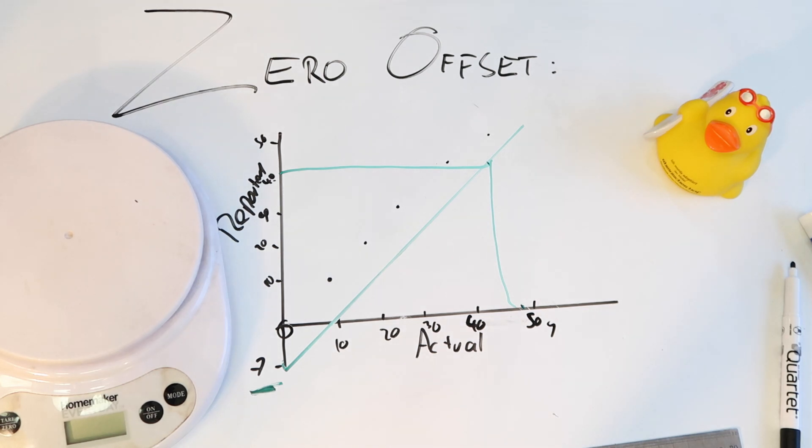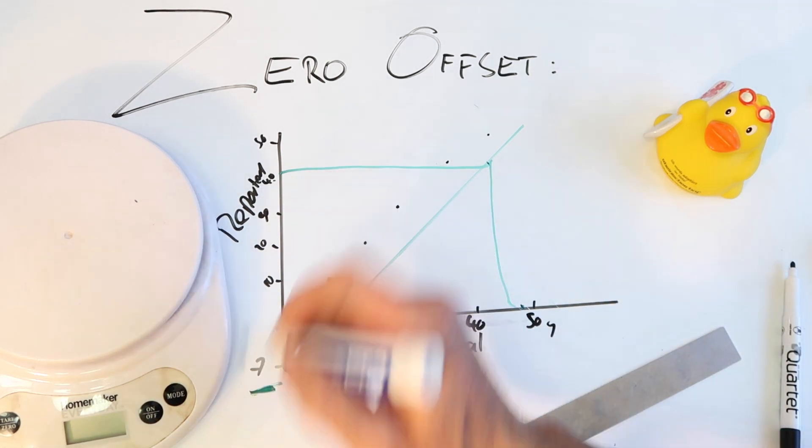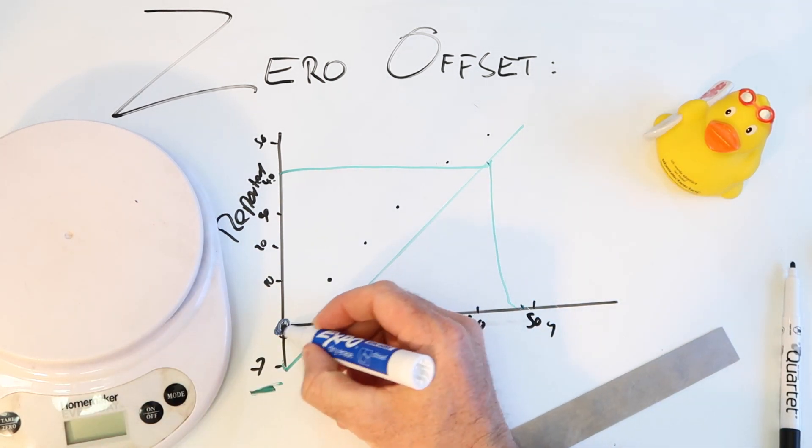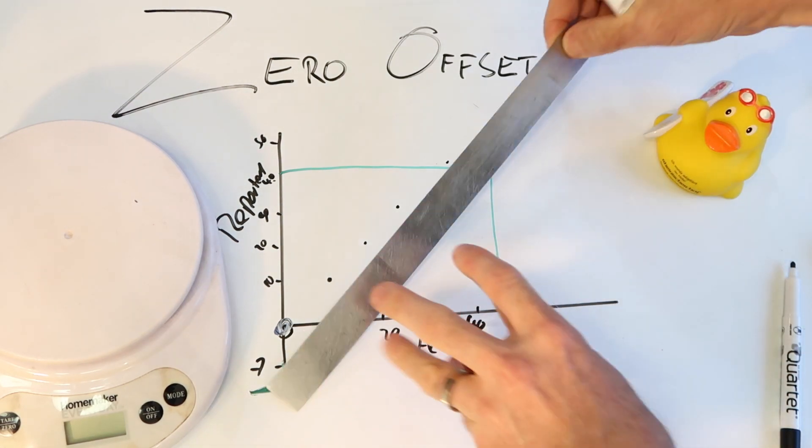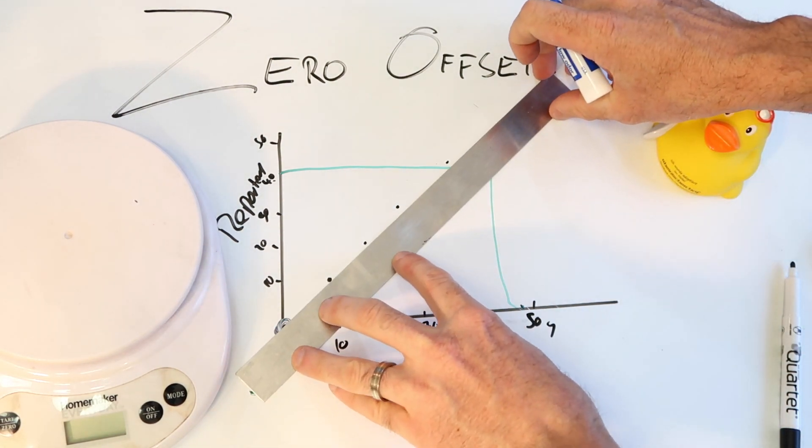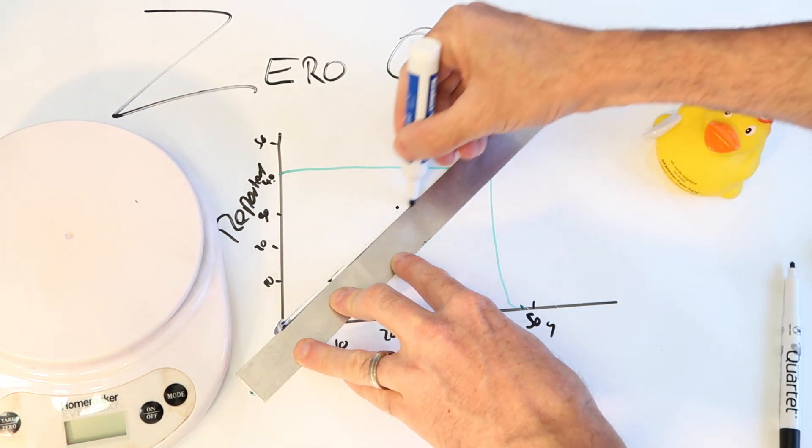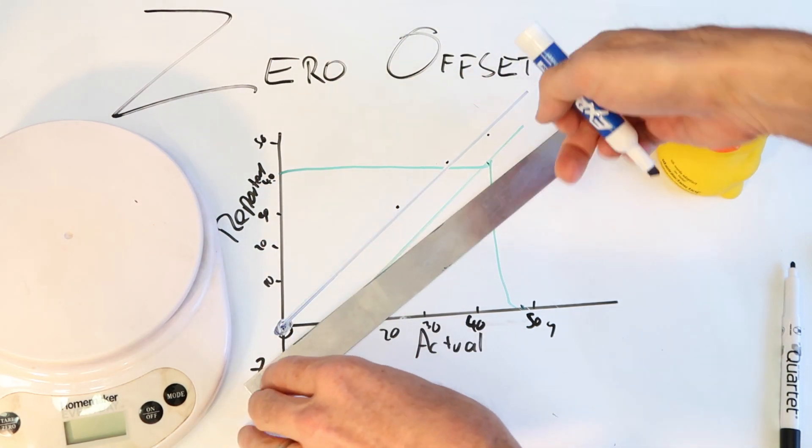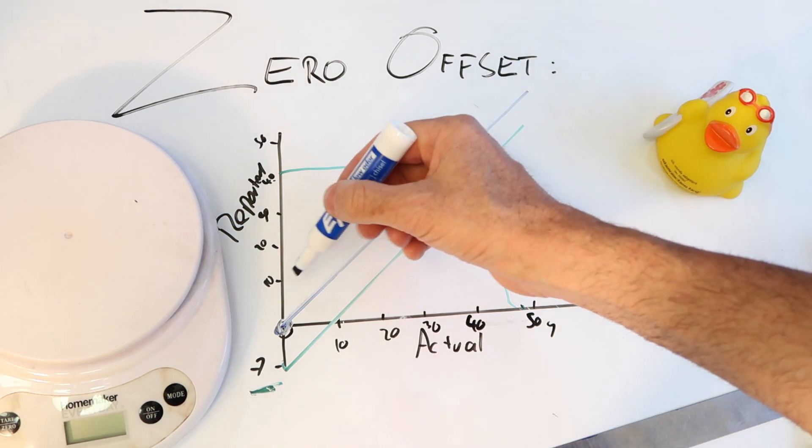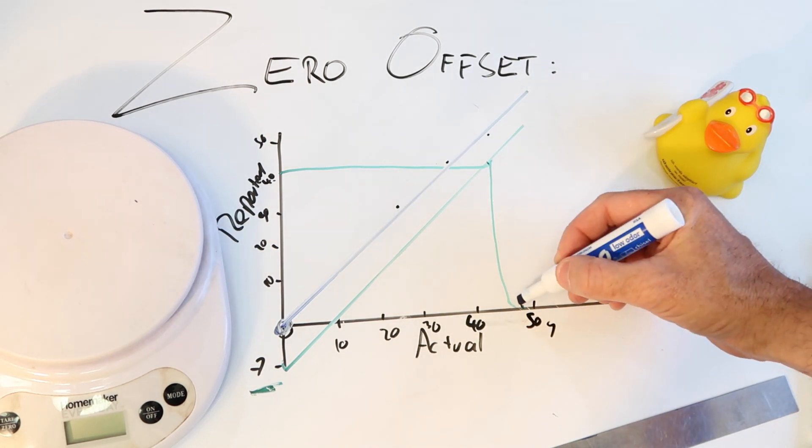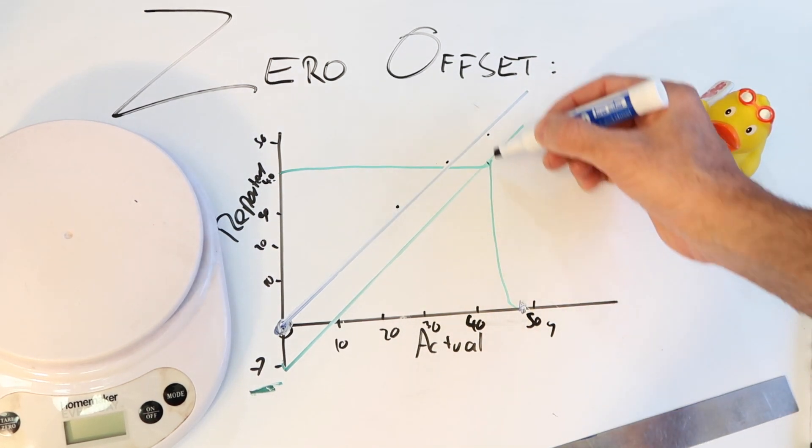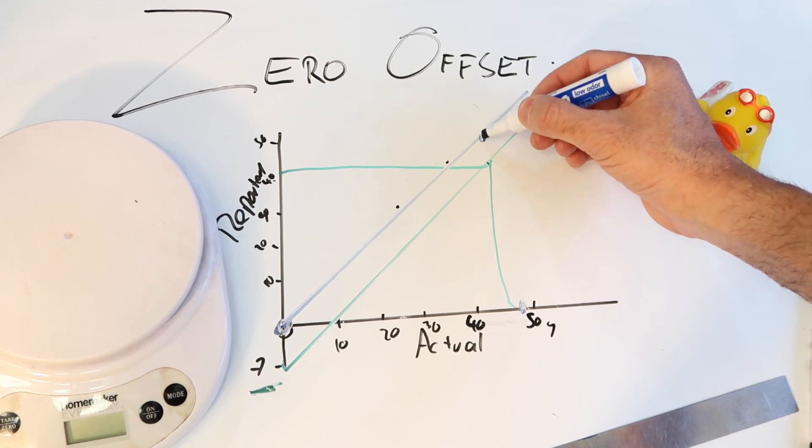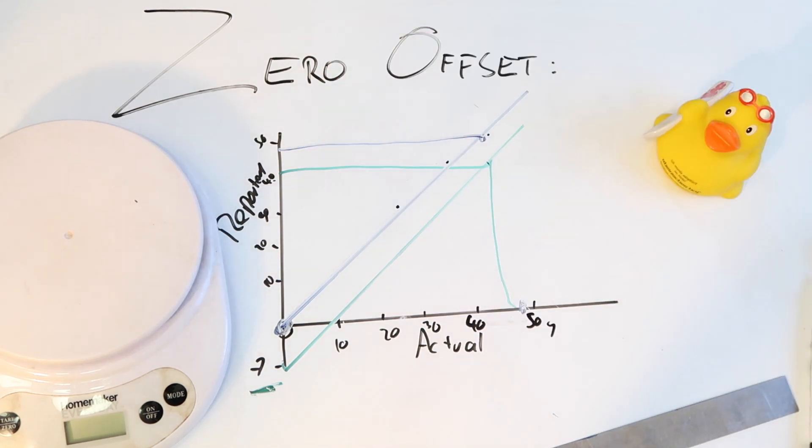We correct that by zeroing the offset. So if we started at blue, so we pressed the tear slash zero, zero the offset, which put the slope up here. Let me draw that correctly. And what we have is the 49 gram duck up here weighing exactly 49 grams.